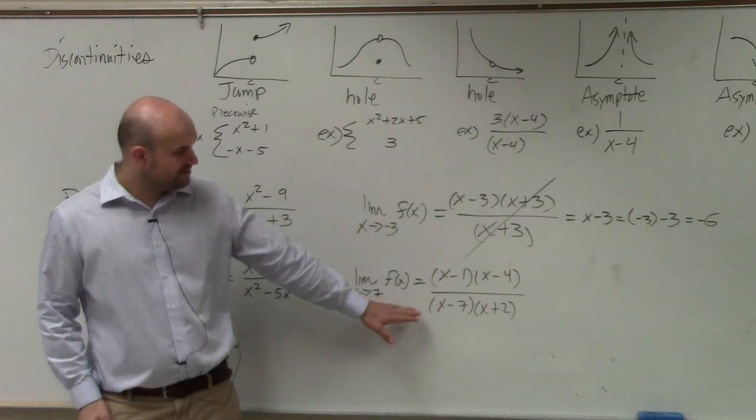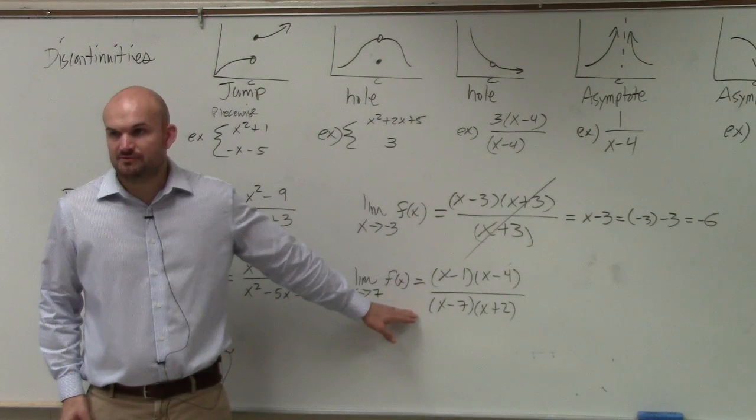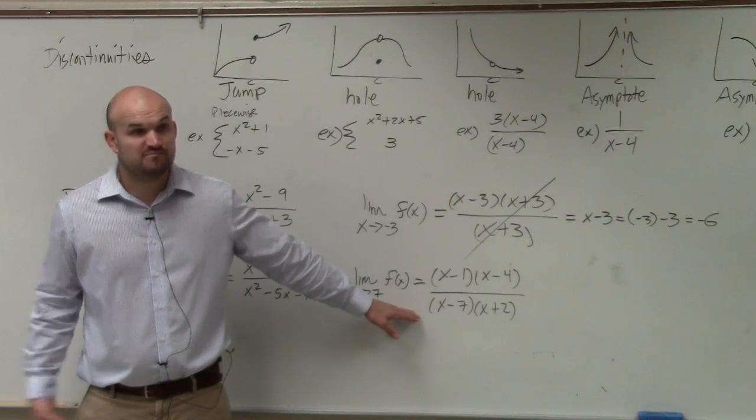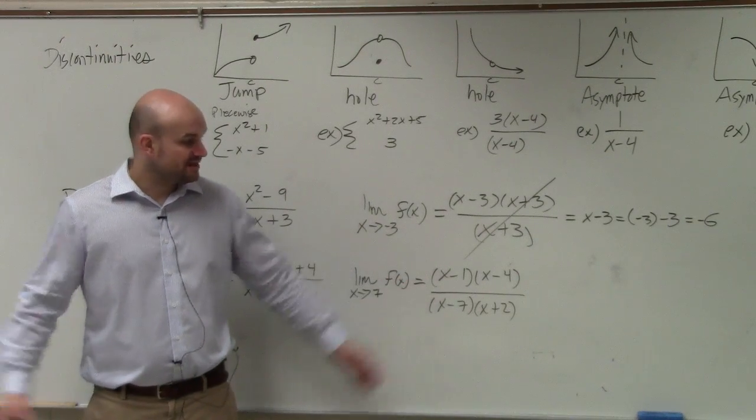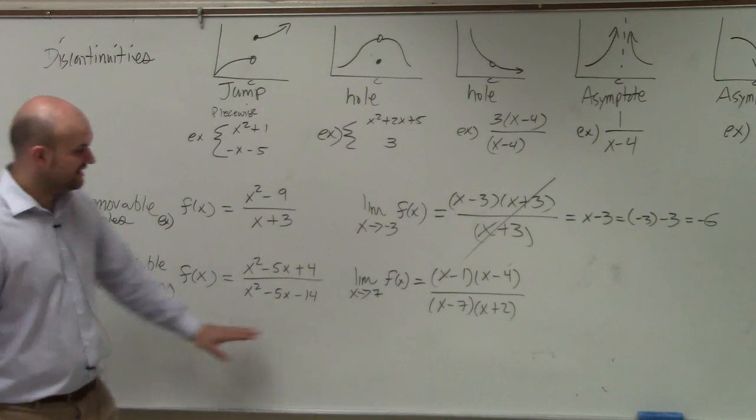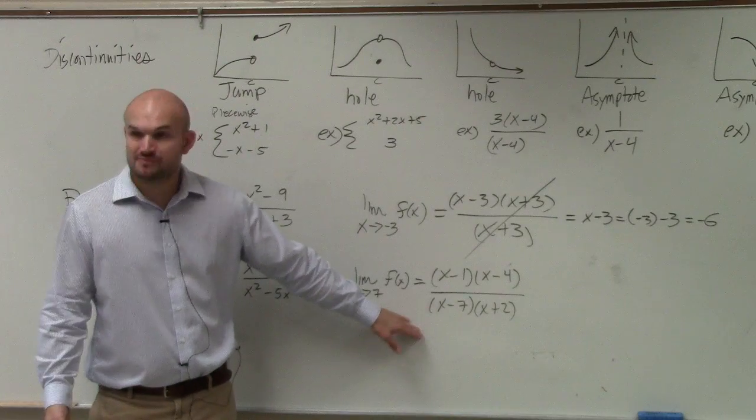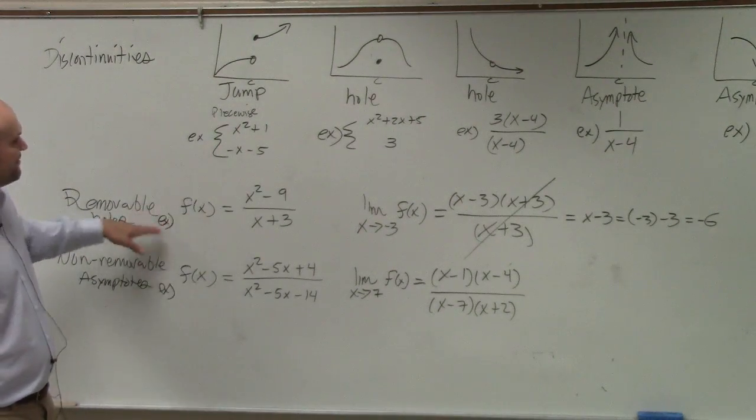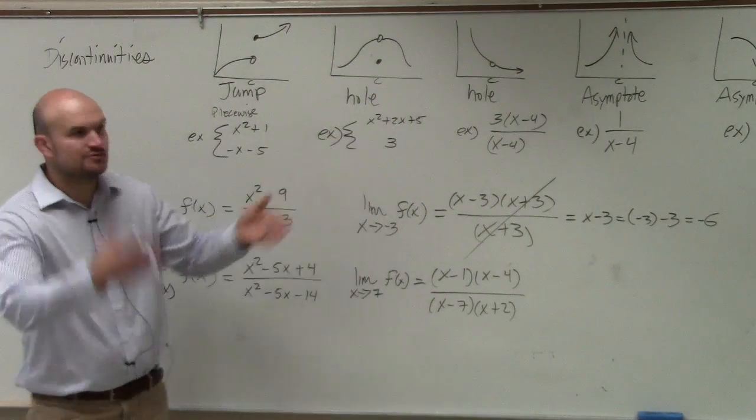And as you guys see, neither of these are divide out using the division property. Right? None of them work out division property. So guess what? They are non-removable. These are going to provide us with asymptotes. Whereas this is going to provide us with a hole, because it's removable.